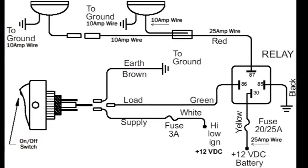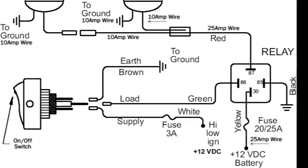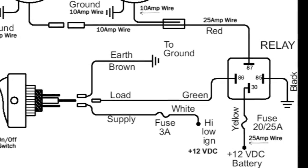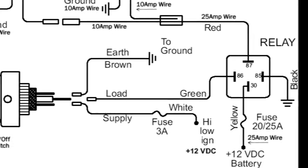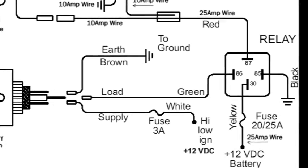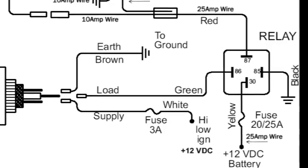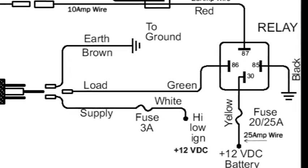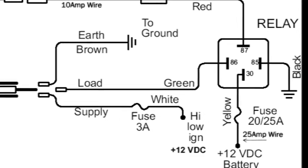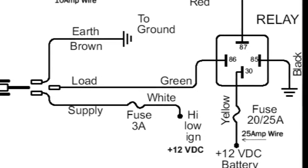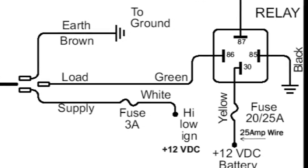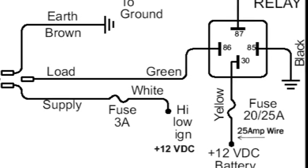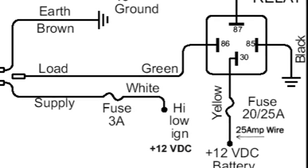If you take a look at the diagram on the screen, you'll notice that each blade has a specific purpose. The number 30 blade is a 12 volt DC blade coming directly off your battery. The number 85 blade is your ground. The number 86 is a switched blade that will come from the switch, from your automotive switch. And the number 87 will then go to your lighting or your accessory that you're going to be powering.